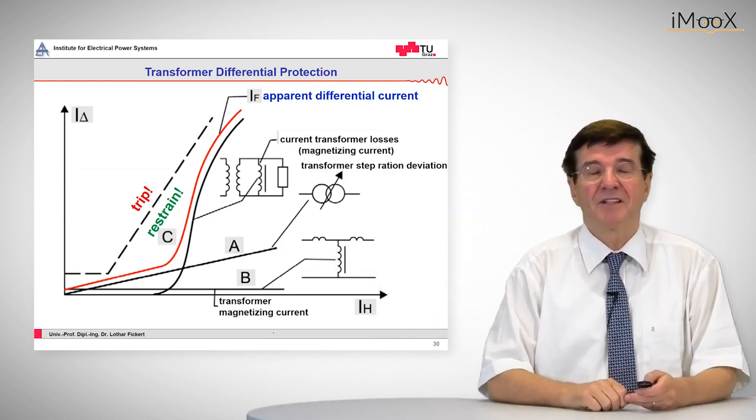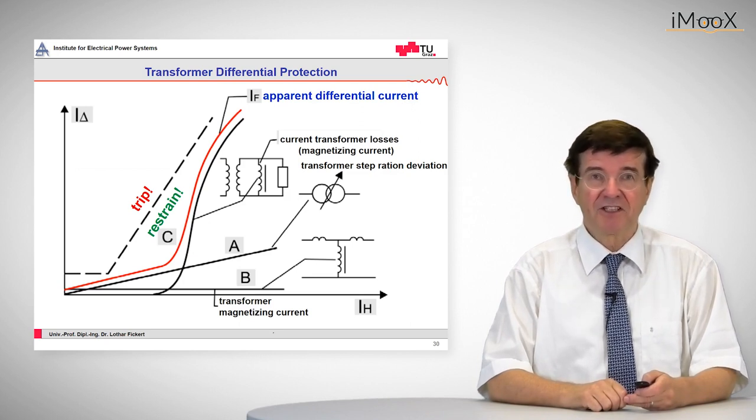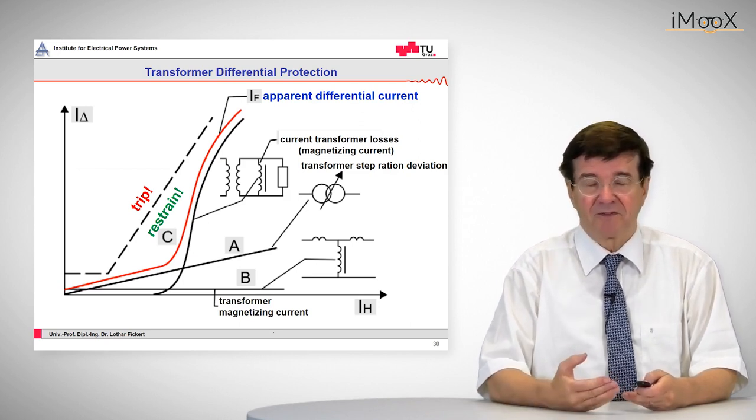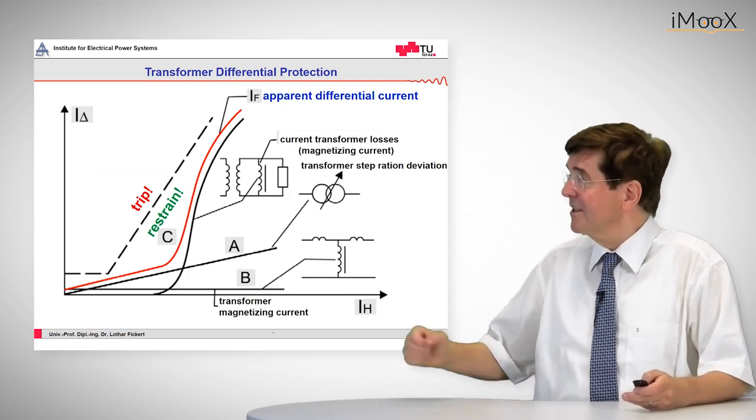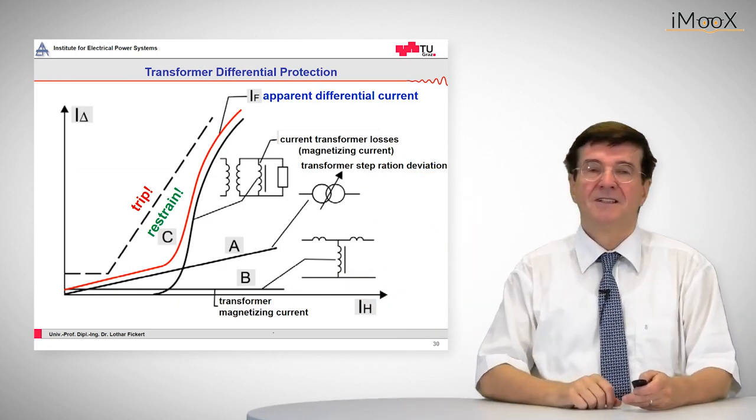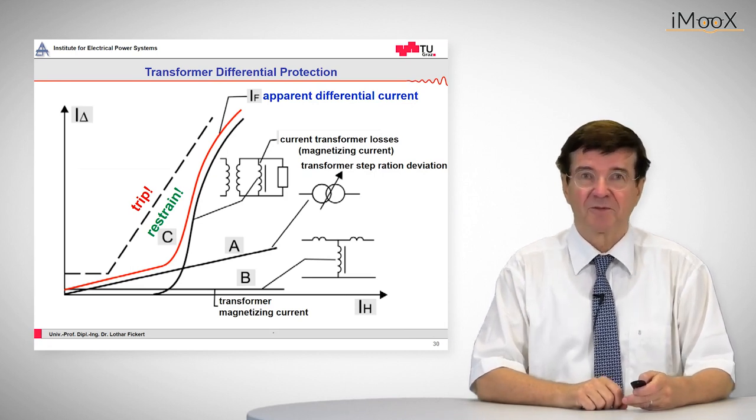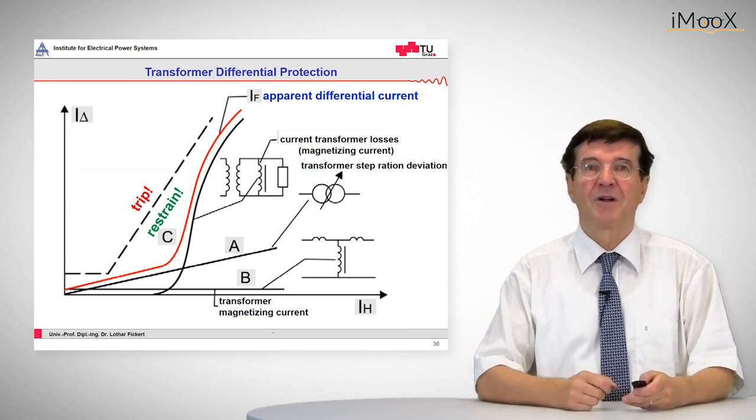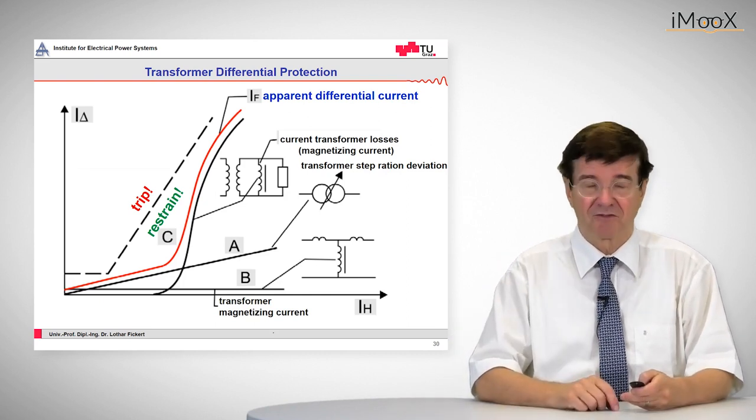Also we can have in a transformer, due to the effect of saturation, a saturation differential current that comes up in heavy through fault conditions. All these add up to this S-shaped accuracy curve, and the differential protection should not pick up if we are below this curve. If we are above, then we have a severe fault and the trip must occur.